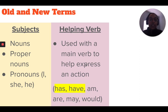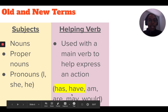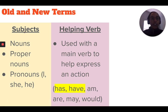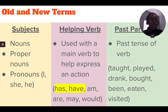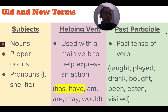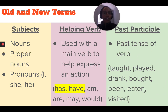Helping verbs include has, have, am, are, may, and would. These words can be used by themselves but are often used with other verbs. We also have past participles, which are just the past tense of common verbs — for example, teach becomes taught, play becomes played, and drink becomes drank. The helping verb is placed with the main verb to help express the action, so it could be 'I have taught' or 'I have played.' Make sure you understand these terms because I'll be referring back to them throughout the lesson.